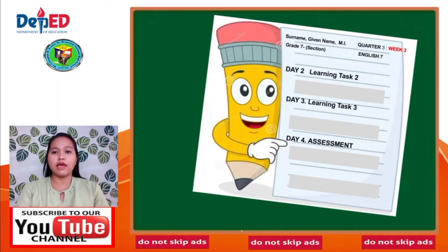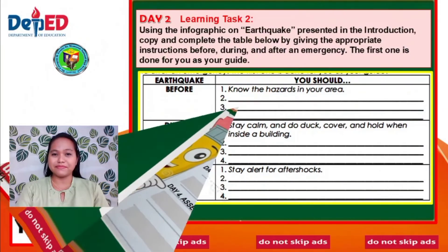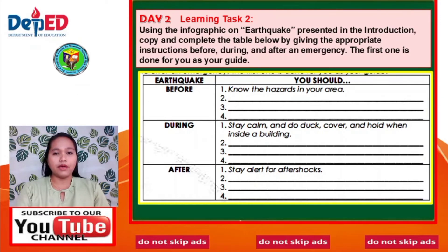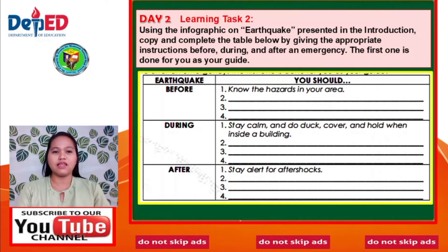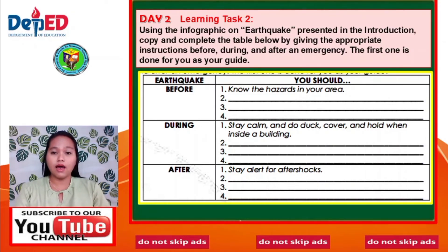For Day 2, you are going to do Learning Task 2. Using the infographic of the earthquake presented in the introduction, copy and complete the table by giving the appropriate instructions before, during, and after an emergency. The first one is done for you as a guide. For example — before: know the hazards in your area. During: stay calm and do the cover-and-hold when inside the building. After: stay alert for aftershocks. Use the infographic provided earlier.